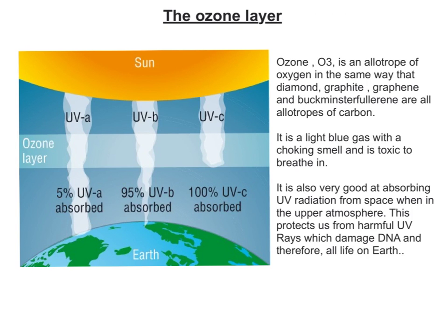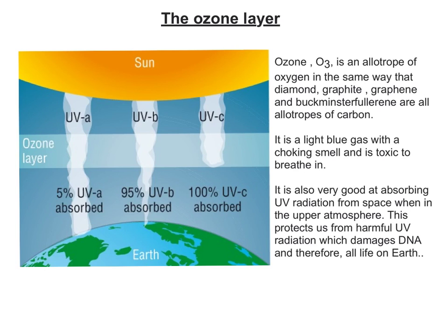A little bit of background on ozone. It's basically an allotrope, or an elemental version of oxygen, in a similar way that diamond, graphite, graphene and buckminsterfullerene are all different versions of carbon. It's a gas that, if you were to breathe it in, is actually quite toxic. It can be produced down here on Earth by things like diesel engines and electrical equipment, and it contributes to things like asthma, bronchitis and respiratory problems. However, it has an absolutely vital protective role in the ozone layer, which is a naturally formed layer of ozone in the upper atmosphere, in the stratosphere.